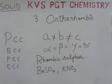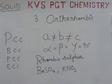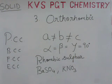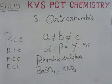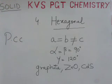Let's do a quick recap. In cubic, tetragonal, and orthorhombic, the bond angle is 90 degrees. In cubic, all three sides a, b, c are equal. In tetragonal, only two sides are equal. In orthorhombic, all three sides are unequal.